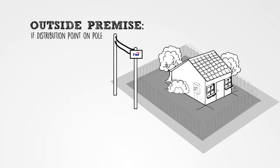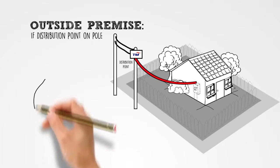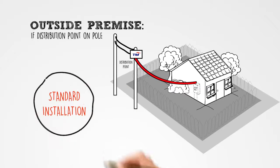For distribution point located on pole, pulling the cable from pole straight to your entry wall is a standard installation. Again, no additional charge.